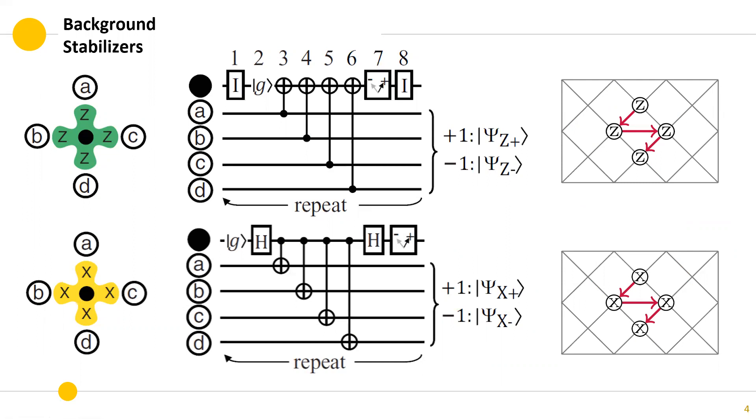We can also see that this code is a CSS code since the X and Z operators are separated in different stabilizers. Using these two stabilizers, the code can correct any arbitrary error on a qubit.